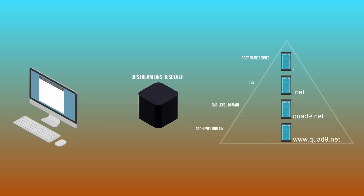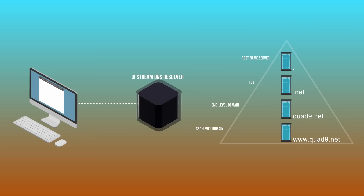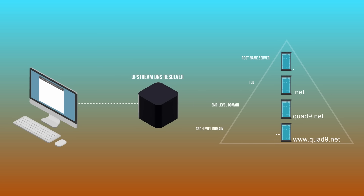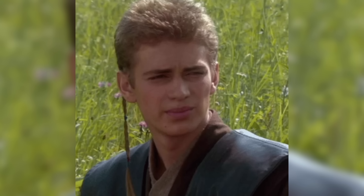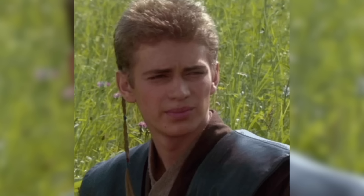Although this process happens in milliseconds, it takes a lot of work to make all these queries. So typically, your computer or your phone will outsource the task to what's called an upstream DNS recursive resolver. That resolver will do these lookups for you, which means that you're sending the resolver every URL you want to visit, so that it can find the IP address for you. We're going to let someone see all our internet activity by sending them our DNS requests.